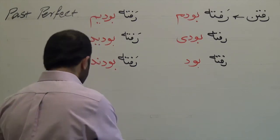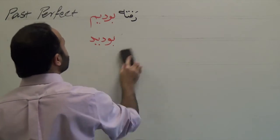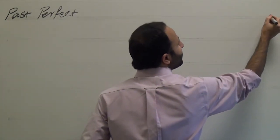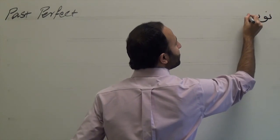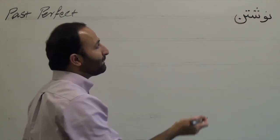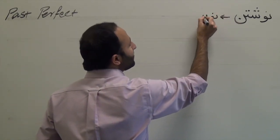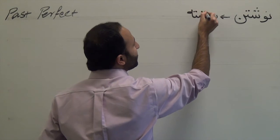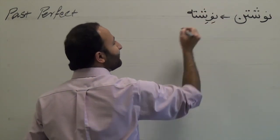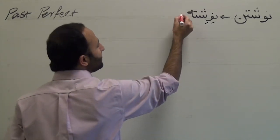Let's look at another example: neveshtan, meaning 'to write.' In order to form the past perfect, we just need the past participle of neveshtan, which is neveshteh. Then conjugate it with the past tense of the verb 'to be.'